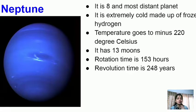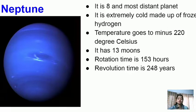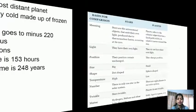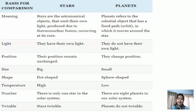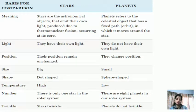Stars are astronomical objects that emit their own light, produced due to thermonuclear fusion occurring at their core — hydrogen and helium collide and release light. Planets are celestial objects that have a fixed orbit and move around the Sun, reflecting light. Stars can be very large compared to planets, which are smaller. Stars are generally fixed in position while planets move in orbits.